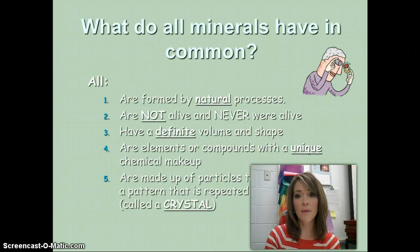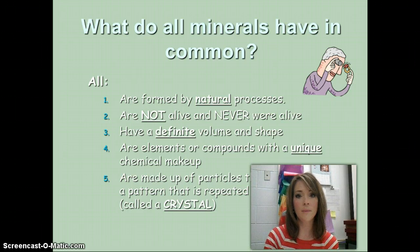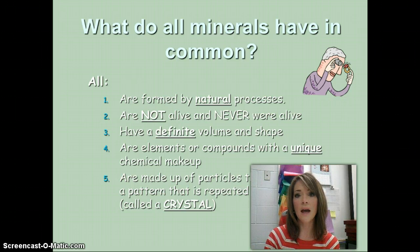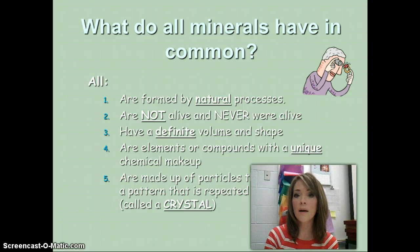Just to review, remember that there are five characteristics that all minerals have. To be a mineral, something has to: one, be naturally formed; two, be inorganic, which means not living, never having been alive; three, be a solid with a definite shape and definite volume; four, have a set chemical composition — an element or compound with a unique, consistent chemical makeup that doesn't vary from sample to sample; and five, have atoms arranged in a repeating pattern called a crystal, which all minerals form even if you can't see the crystal shape.